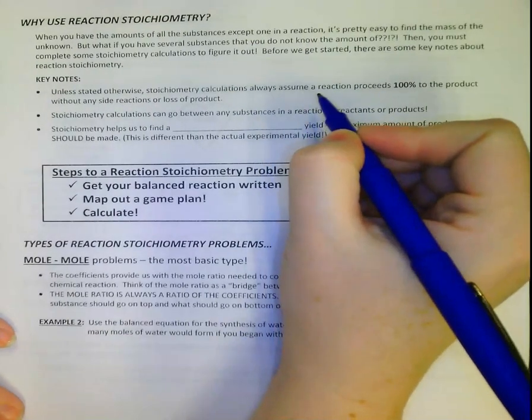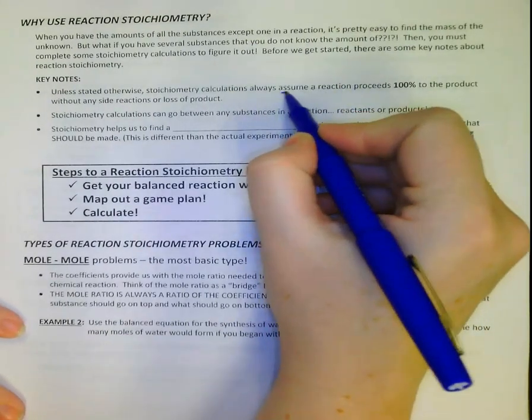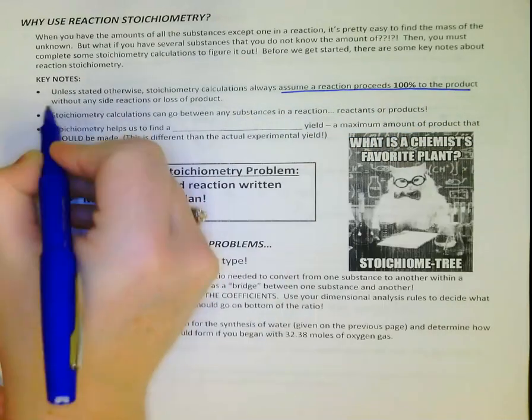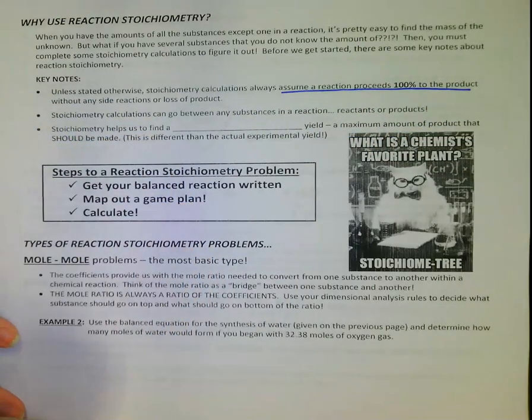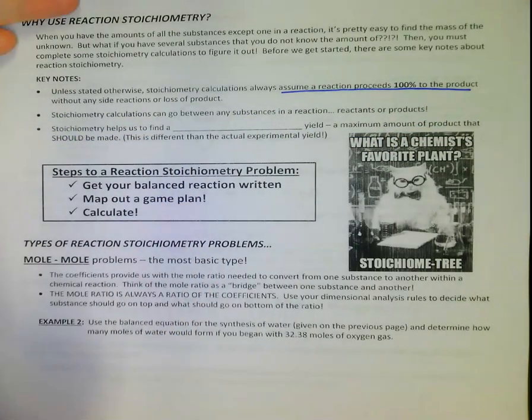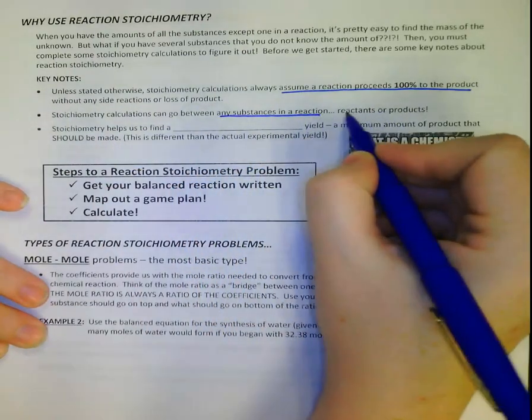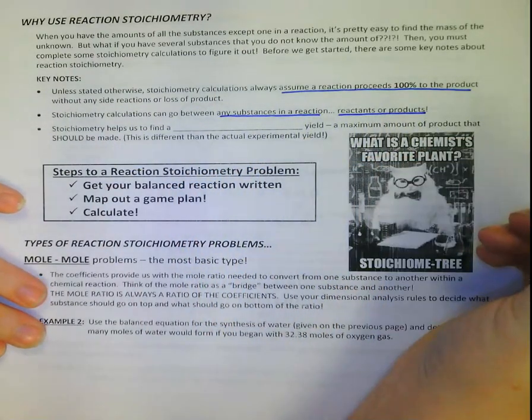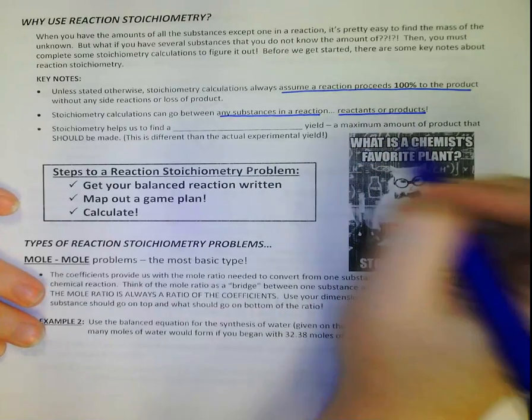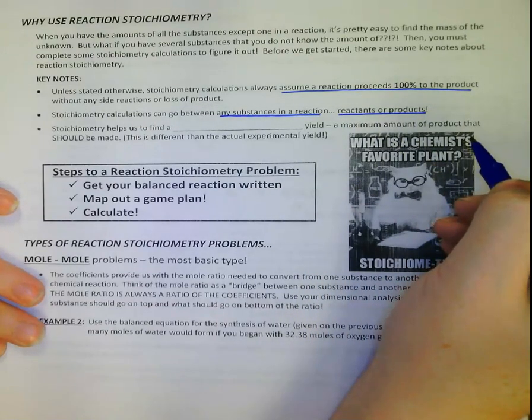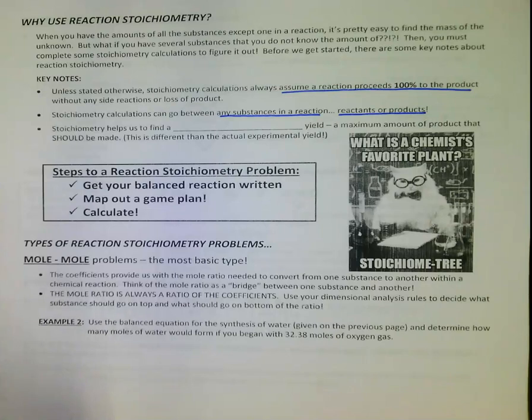Some things that you need to know about reaction stoichiometry. The first thing is that because of law of conservation of mass, we always assume a reaction proceeds 100% to the product. What this means is whatever I have on the reactant side, I have to get on the product side. I'm not having some kind of error in my calculation or error in my experiment and losing something somewhere. Stoichiometry can go between any substances in a reaction. That means I can go between reactants, between products, or from reactants to products.